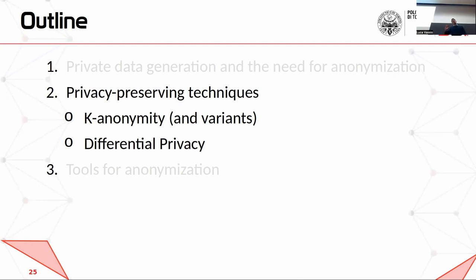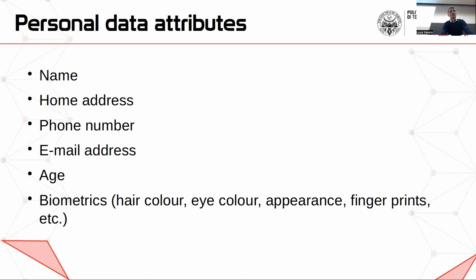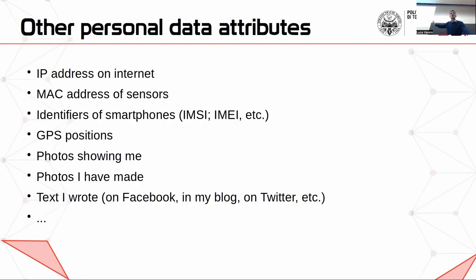This leads to the question: how can we try to ensure, with some degree of certainty, that the data or statistics we publish are anonymous? So we perform privacy-preserving techniques. The first one I'm going to present is k-anonymity. The terminology of k-anonymity includes personal data attributes — things like name, home address, phone number, email address, age, and biometrics. Other kinds include IP address, MAC address, GPS positions, what you wrote, etc. These are all personal data attributes, which can be seen as features.